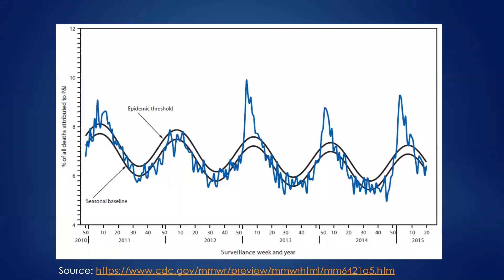That might look something like this, where you have a baseline level of disease that you expect — which on this figure is for pneumonia and influenza, basically flu surveillance. You look at what you'd expect and then set some level above that, whether it's two standard deviations above or some other measure, where you'd start to be concerned and call it an outbreak or epidemic level. So that's step one.